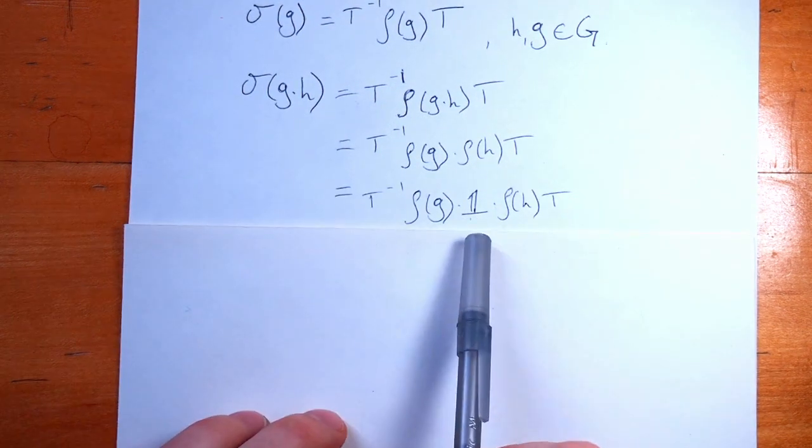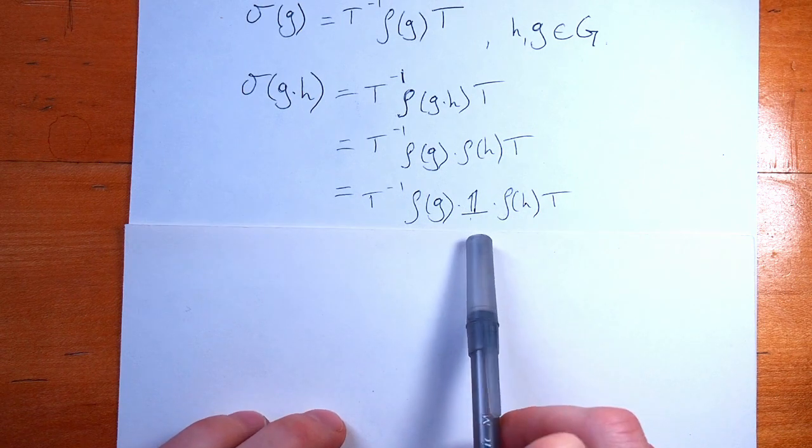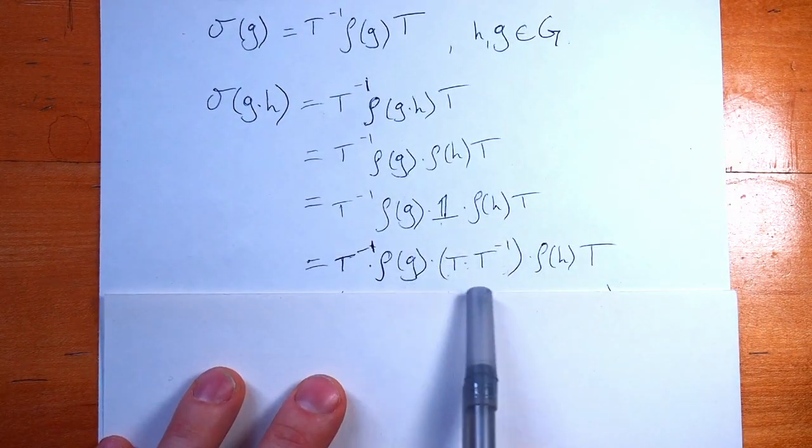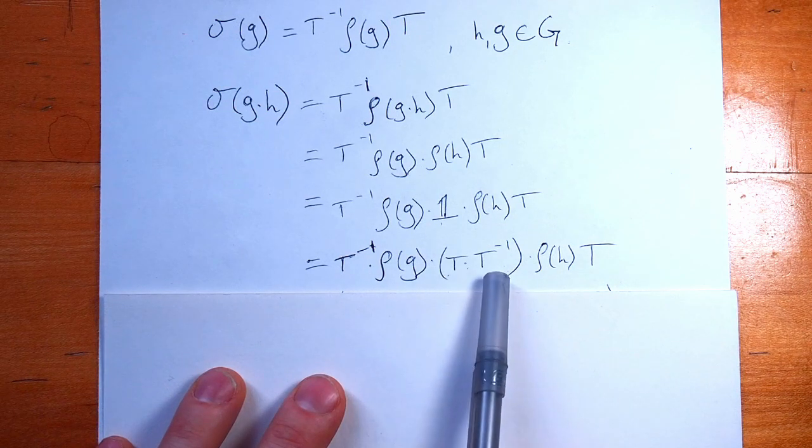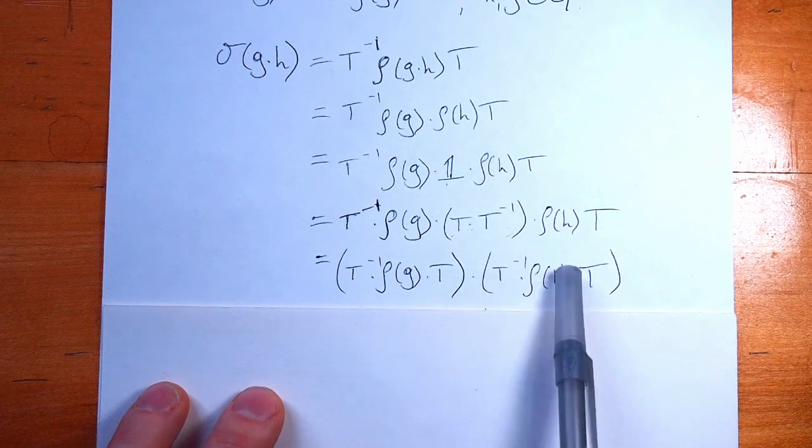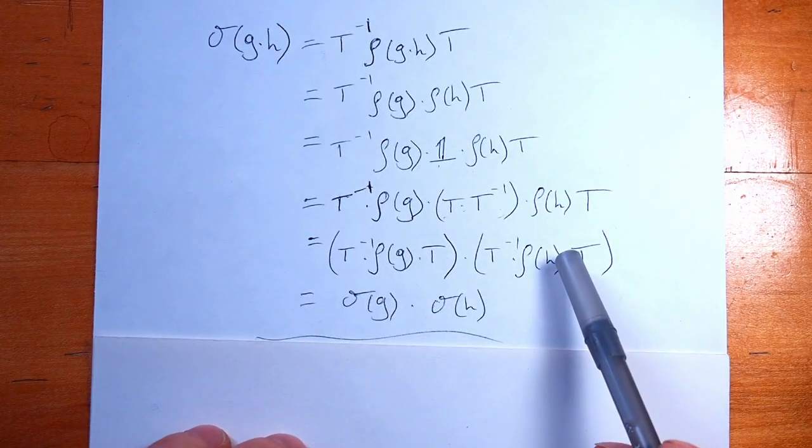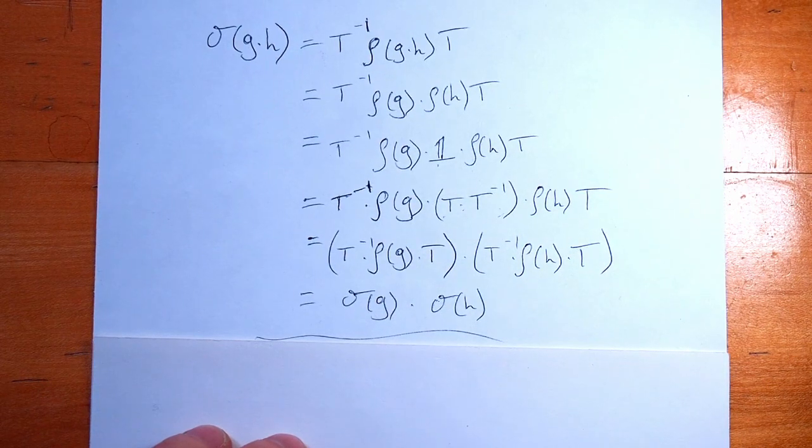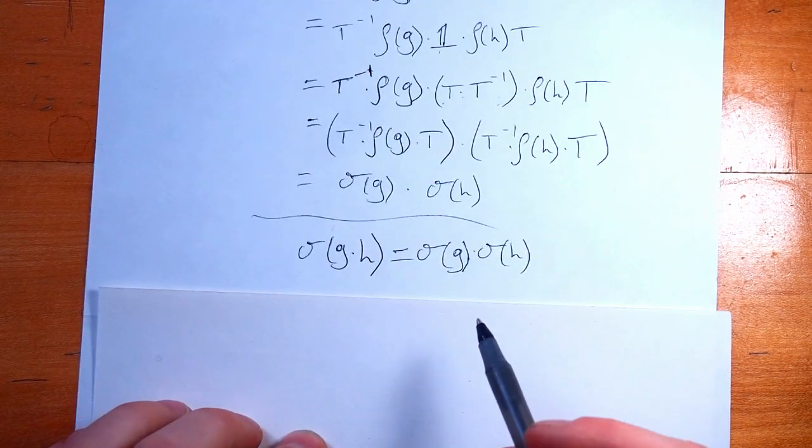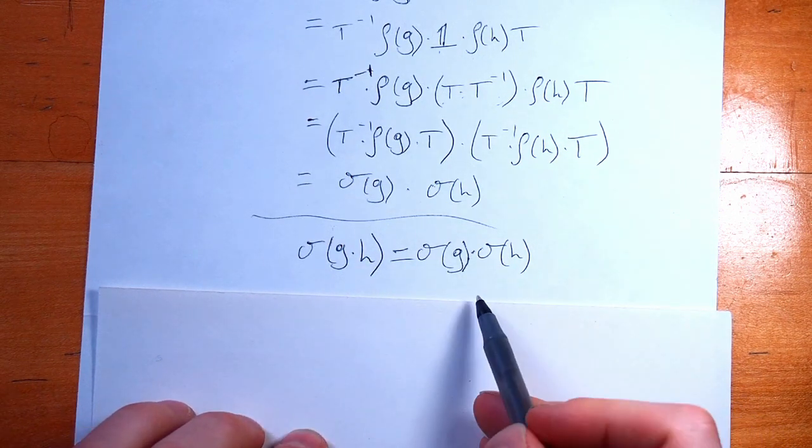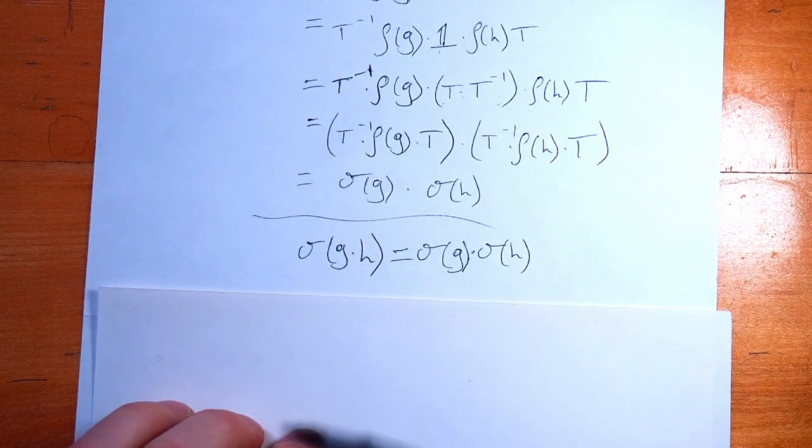The next thing I'm going to do is insert the identity. We can always insert the identity. I'm doing this because I know where I want this to go. But the identity is simply a clever product of T and T inverse. And then here I'm just reassociating. But that is just sigma of g and sigma of h, by our construction. So we have found that sigma is indeed a homomorphism. We have the product before mapping is equal to the product after mapping. It preserves the algebraic structure and is therefore a homomorphism.